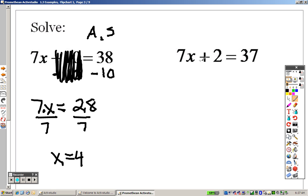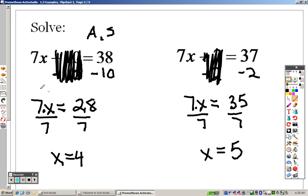Over here, this is addition, so the opposite of addition is subtraction. So I subtract 2 on both sides. They cancel out, giving me a 7x equals 37 minus 2 is 35. This is 7 times x, so I divide both sides by 7, and we get x equals 5 as our answer.